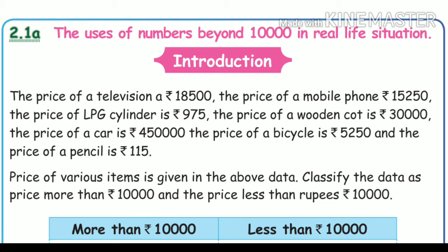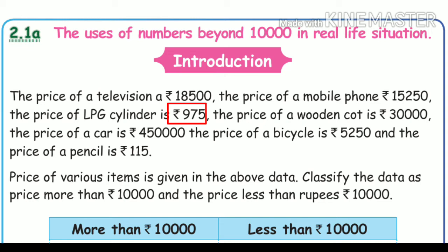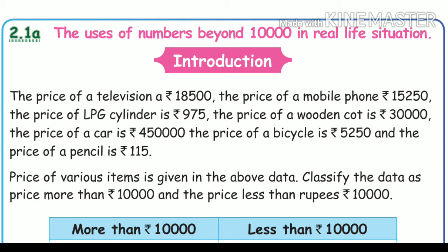The price of a television is ₹18,500. The price of a mobile phone is ₹15,250. The price of an LPG cylinder is ₹975. The price of a wooden cot is ₹30,000. The price of a car is ₹4,50,000. The price of a bicycle is ₹5,250 and a pencil is ₹1,500. Classify the data as prices more than ₹10,000 — television ₹18,500 and mobile phone ₹15,250 are more than ₹10,000.